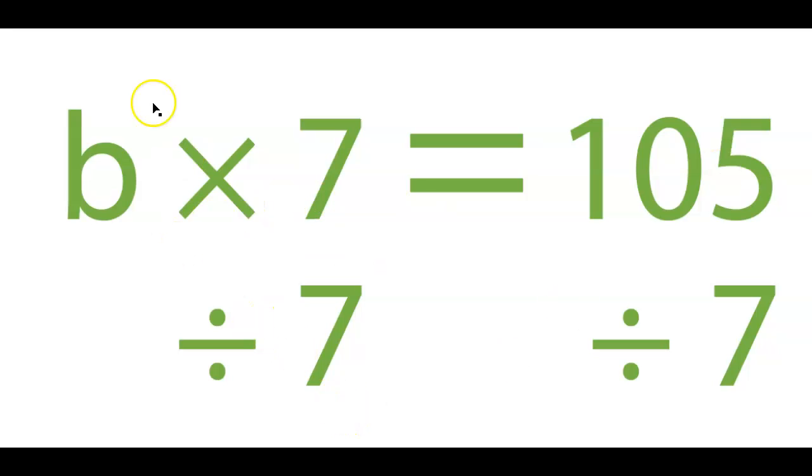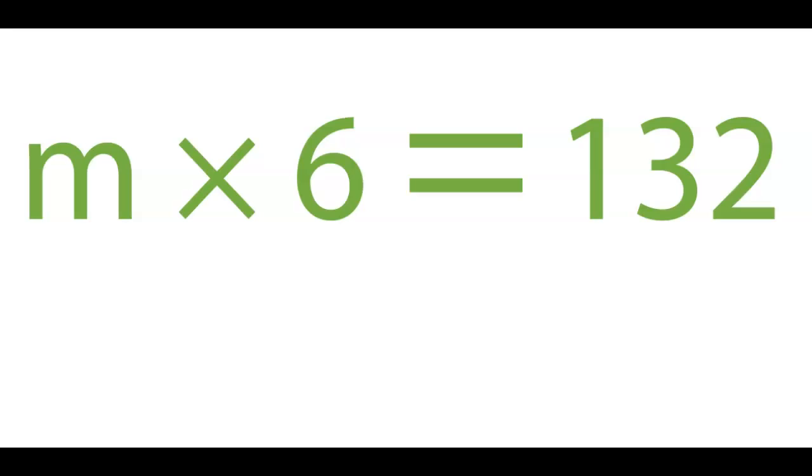Divide both sides by 7 to get rid of times 7. Times 7 is undone by divide by 7. So that's what we're doing over there. It's going to make that a b. And then we're going to do 105 divided by 7 over here. Same thing to both sides. All right.